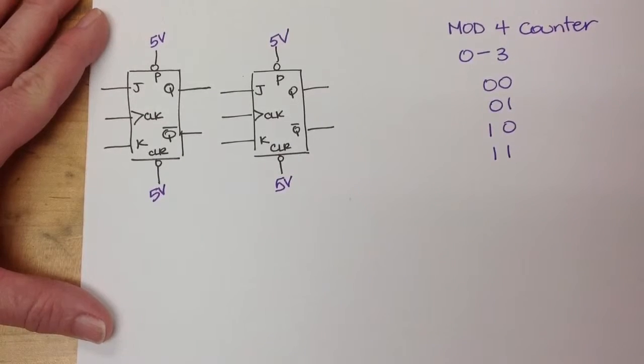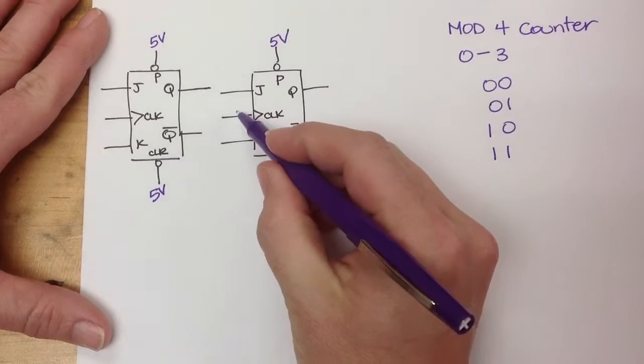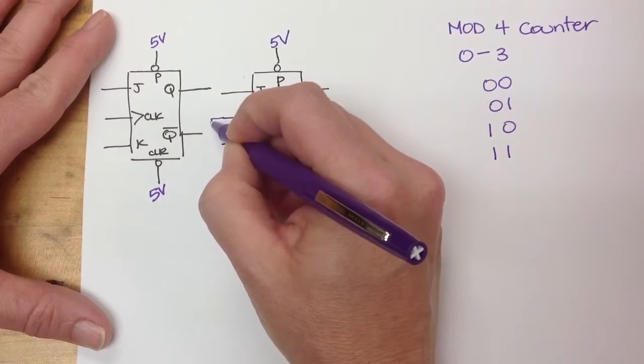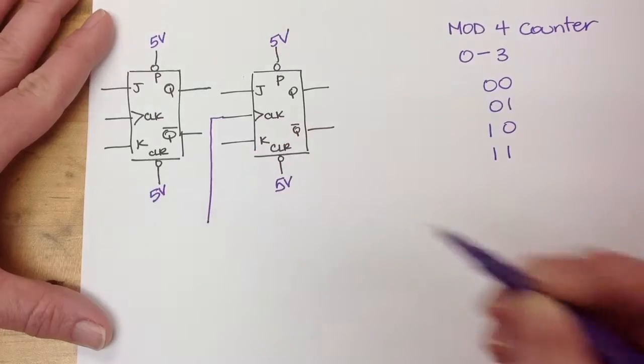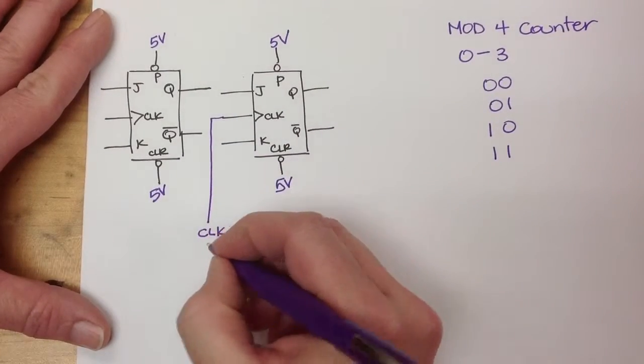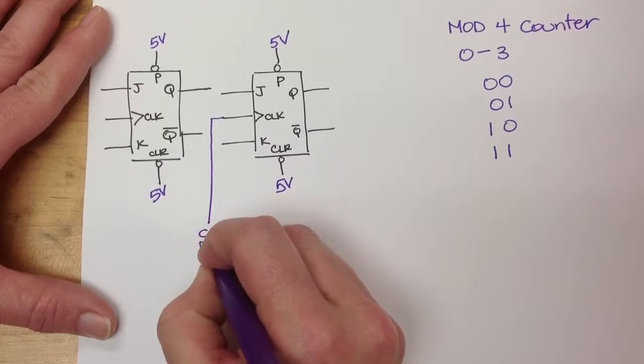We're not going to connect Q bar to anything. Here to the first clock, this one's going to be our first JK flip-flop. We're going to connect the clock that we have, or on our Parallax development board, that's called the pulse generator.